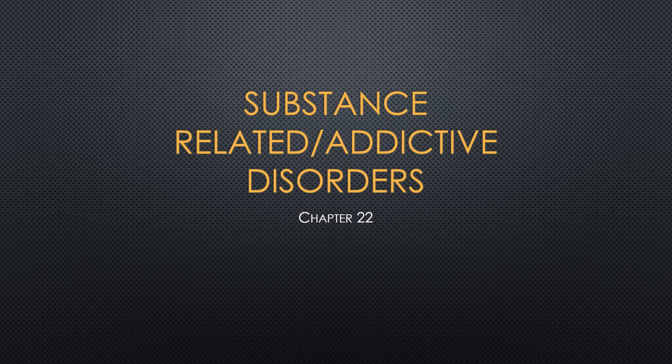We're going to talk about Chapter 22, focusing on substance-related and addictive disorders. Substance use disorders are not disorders of choice. They are very complex diseases of the brain, usually characterized by cravings, seeking, and using regardless of any consequences. Continued use can actually change the brain structure and function. Substance use disorder is the pathological use of a substance that leads to a disorder of use.